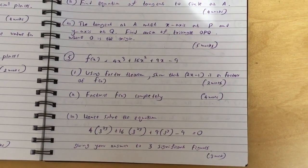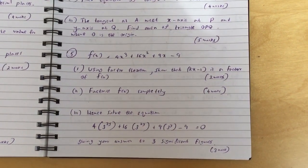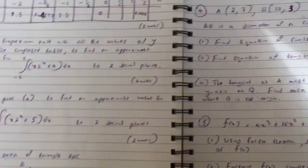Part three: hence solve the equation 4(3 to the 3y) plus 16(3 to the 2y) plus 9(3 to the y) minus 9 equals 0, giving your answers to three significant figures.